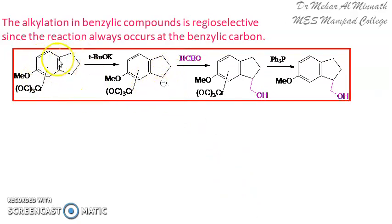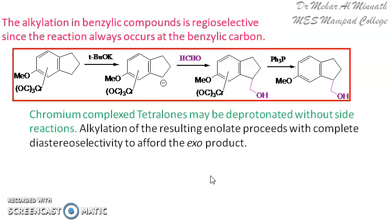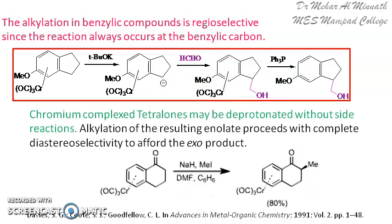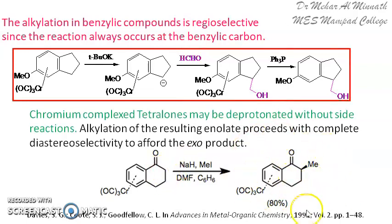The reaction at the benzylic position on the chromium complex is both stereoselective and regioselective, since the reaction happens only at the benzylic position. Here, the base abstracts a proton from the benzylic carbon and the alkyl group is added. An example with the tetralone–chromium complex shows methylation giving 80% of the exo product.